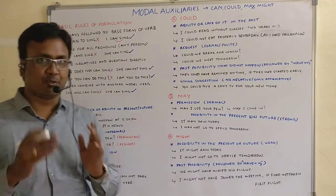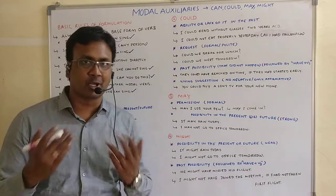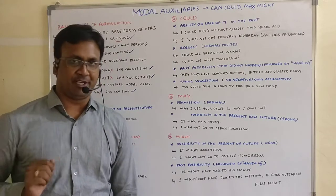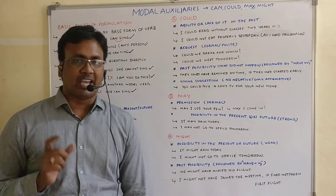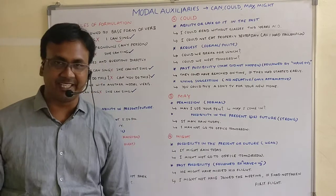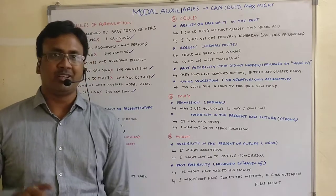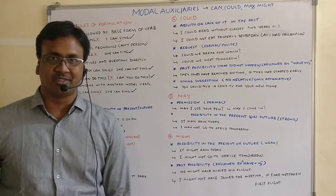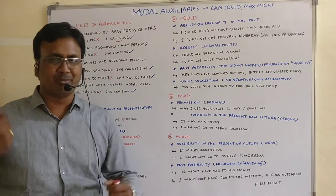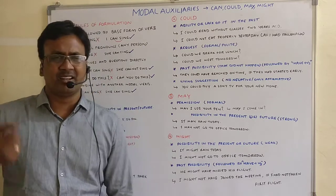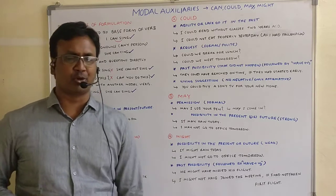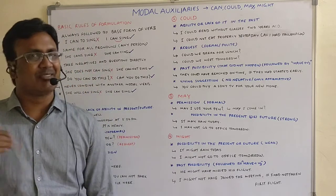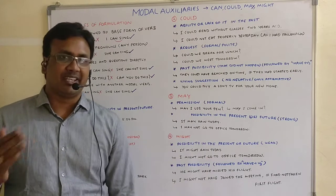The second use case of 'may' is possibility in the present or future — with a strong possibility. For example, 'It may rain today' or 'I may not go to office tomorrow.' You are saying these things are possible, and the possibility is strong. When you use 'may,' you are hinting that the possibility is strong. But when you use 'might,' the possibility is weak. If you say 'I will not go to office tomorrow,' that is certainty — but 'I may not go' is only a strong possibility.